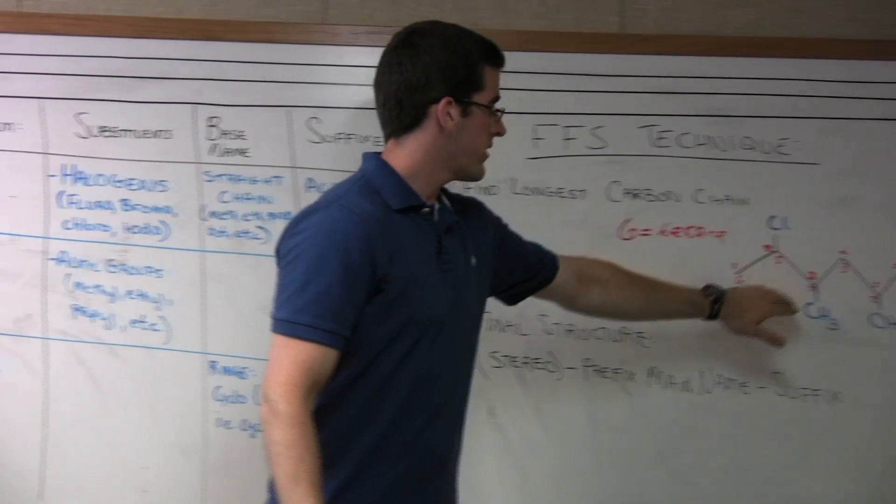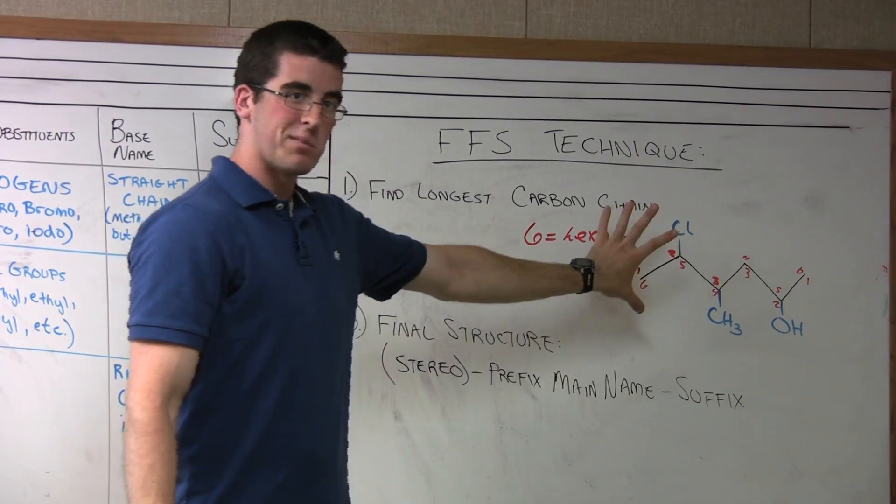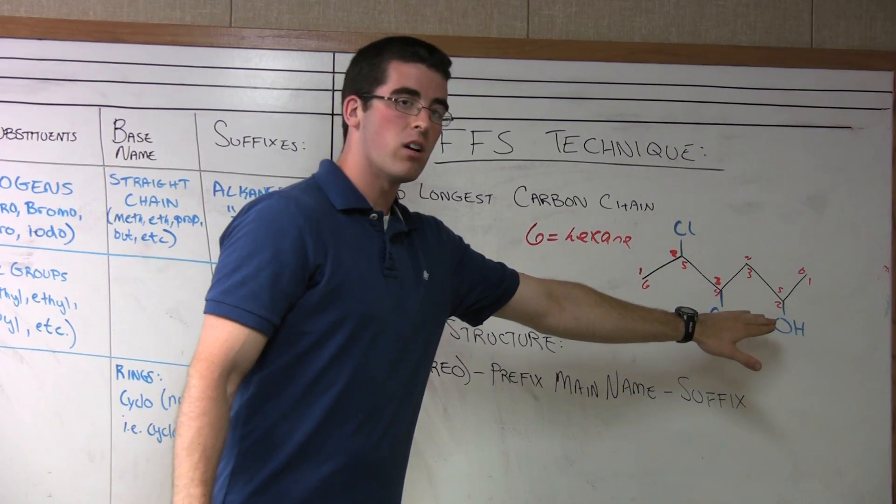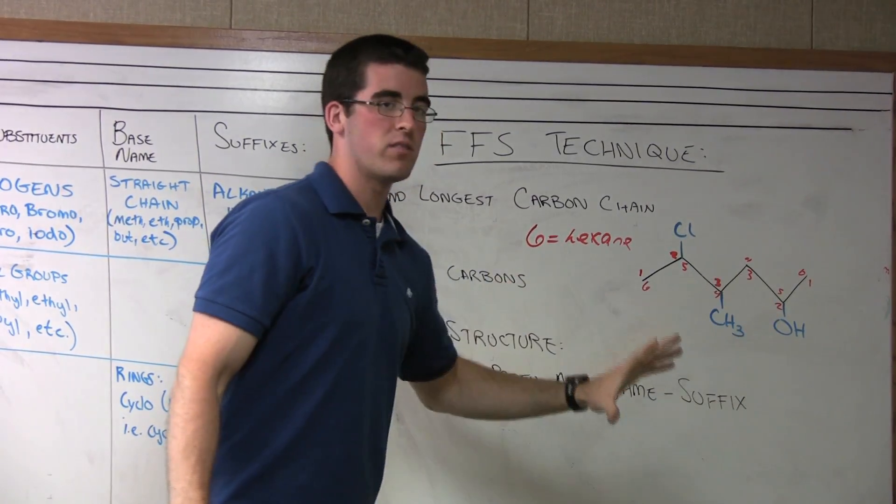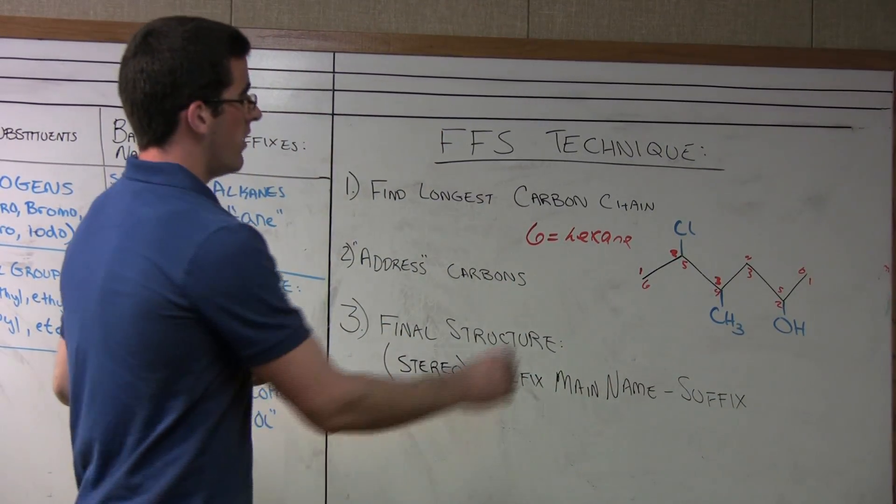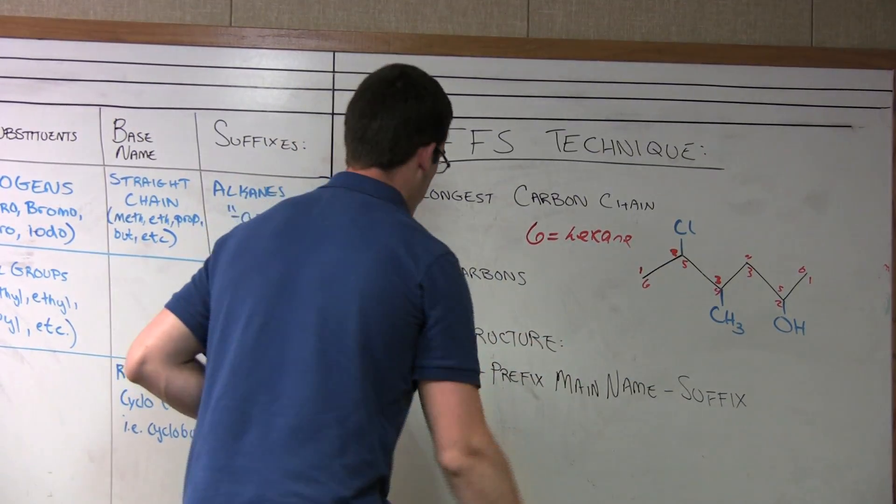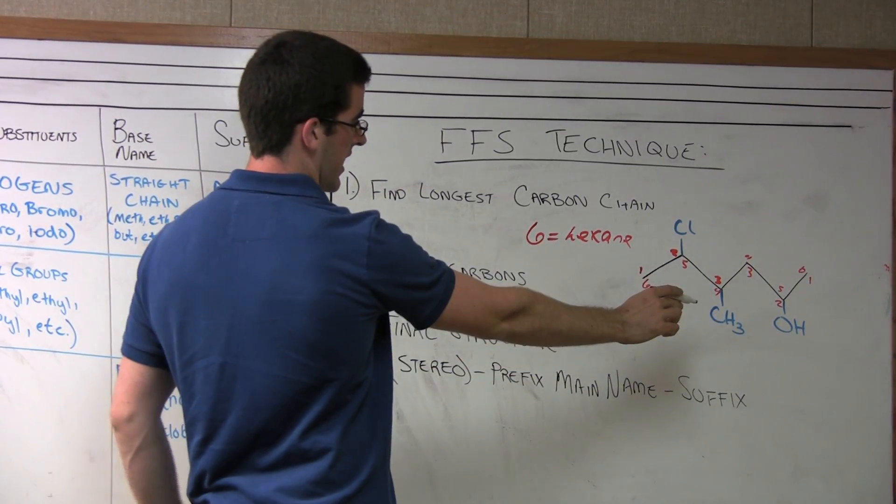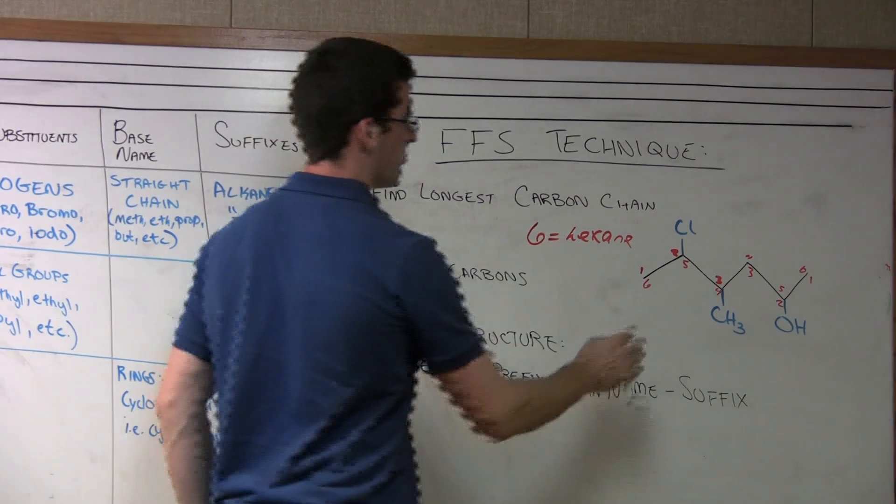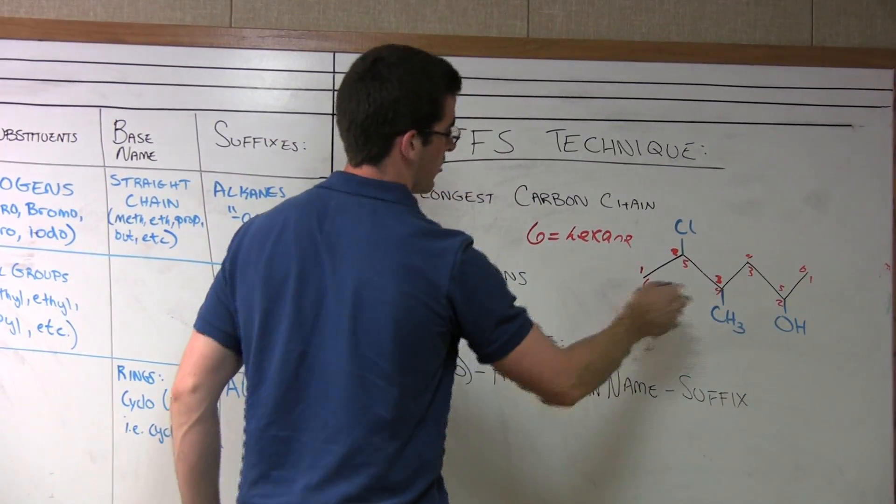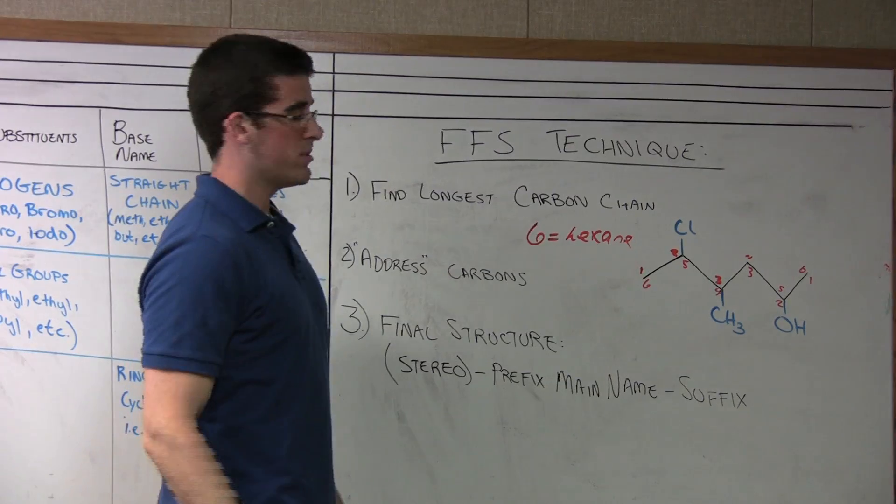We have a halogen and an alkyl group, so these are going to be the substituents that become prefixes. We also have the alcohol, which is going to take the form of a suffix. According to IUPAC, the alcohol has higher priority over these two substituents. Since it's the highest priority, we want to give it the lowest number. Looking at our two numbering systems, we want to go from right to left to give the alcohol the second position.